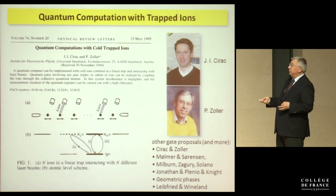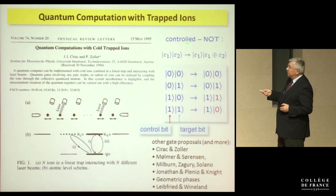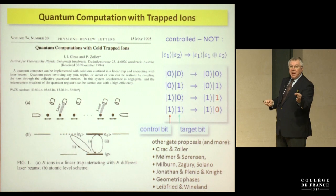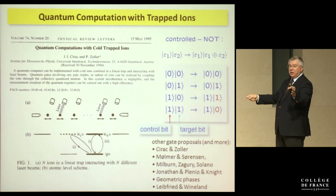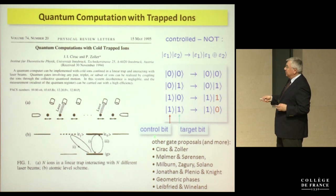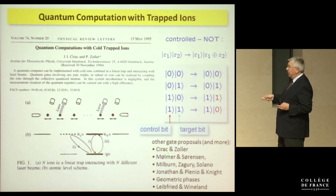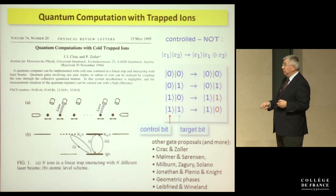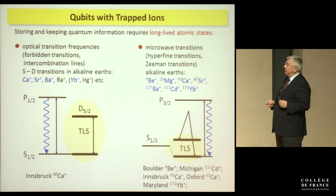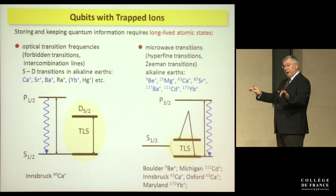Cirac and Zoller's key insight was how to implement the CNOT gate: how do you make one atom switch its state depending on the excited-state amplitude of a first atom? That was the hard part realized in their famous paper. Later gate schemes were proposed by Mølmer-Sørensen, Milburn-Schneider-Krebs, geometric phases by Jonathan Plank, and others based on light shifts.